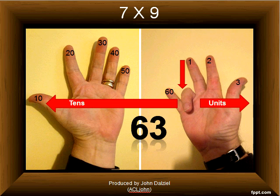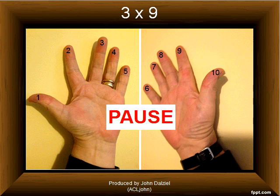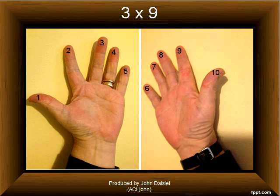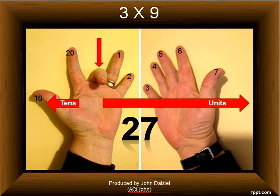Pause the video. Okay, let's see if you were correct. Three times nine is 27—two to the left of the finger bent over and seven to the right.